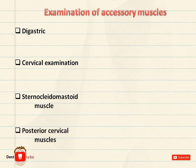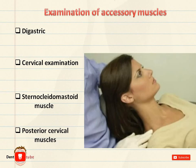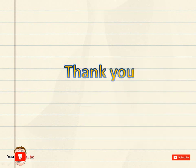Posterior cervical muscles. In palpating these muscles, the examiner's fingers slip behind the patient's head. Those of the right hand palpate the right occipital area and those of the left hand palpate the left occipital area. The fingers then move down the length of the neck muscles through the cervical area and any patient discomfort is recorded. That's all for TMJ examination.